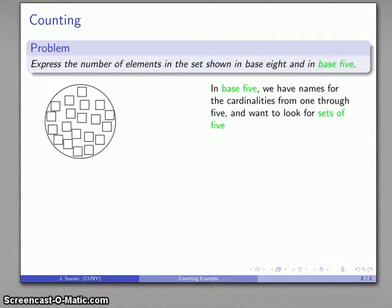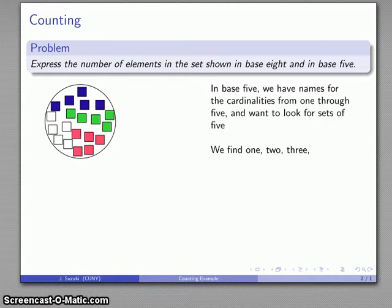Well, if I'm working in base 5, I have names for the cardinalities of 1 through 5. And I want to look for those sets of 5. So, I'll look for a set of 5 and another and another and another. And that actually gets everything that we have. And I have 1, 2, 3, 4 sets of 5. And again,